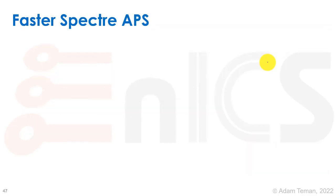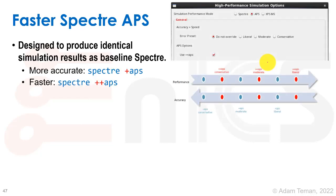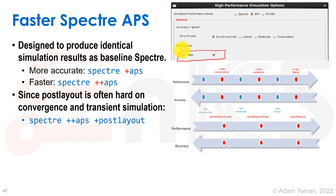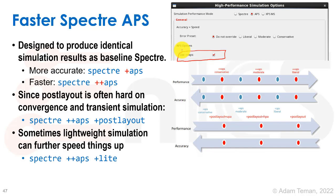There are a couple of options for making Spectre APS even faster if it's going too slow. There is an option called ++APS, which you can see in the high-performance simulation options. It is a bit of a trade-off — you get better performance at the price of some accuracy, but still keeping very high APS-style accuracy. There is also a post-layout option that optimizes capacitors, resistors, and inductors from post-layout extraction. There is also a lightweight simulation option, +lite, to get better speed while checking if accuracy is maintained.